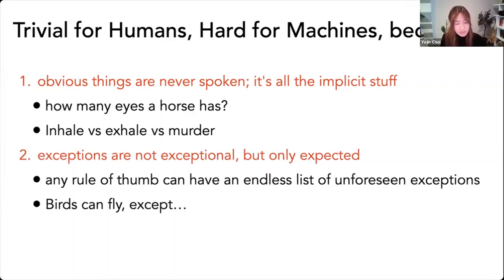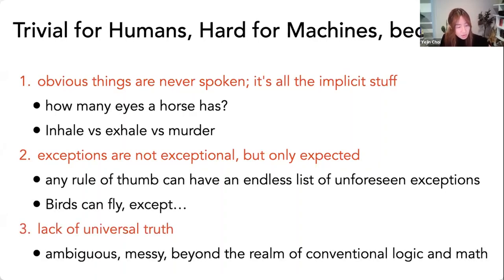Exceptions are not exceptional, but only expected when it comes to common sense rules. So birds can fly except when it cannot fly, including when birds are sleeping or newborn birds or birds are trapped in a cage or there's too much rain. And there are a million reasons as to why birds may not be able to fly. And the thing is, humans can just reason about these things, whereas machines may or may not be able to do so. Now, there's also lack of universal truth. This is quite important for the purpose of this talk, because the uncomfortable thing about common sense is that it can be ambiguous, it can be messy. And as a result, it can be beyond the realm of conventional logic and math. And although common sense is commonly shared knowledge, it's not universally shared knowledge.